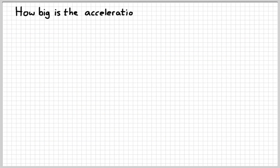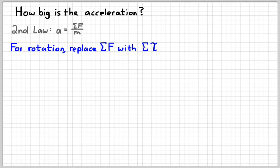So the next question is, how big is this acceleration? Remember from way earlier in the year that Newton's second law gives us the acceleration due to a net force. We're going to have something very similar for a rotating object. So when we're rotating, we're going to replace the net force with the net torque. We're going to replace A with alpha for angular acceleration.